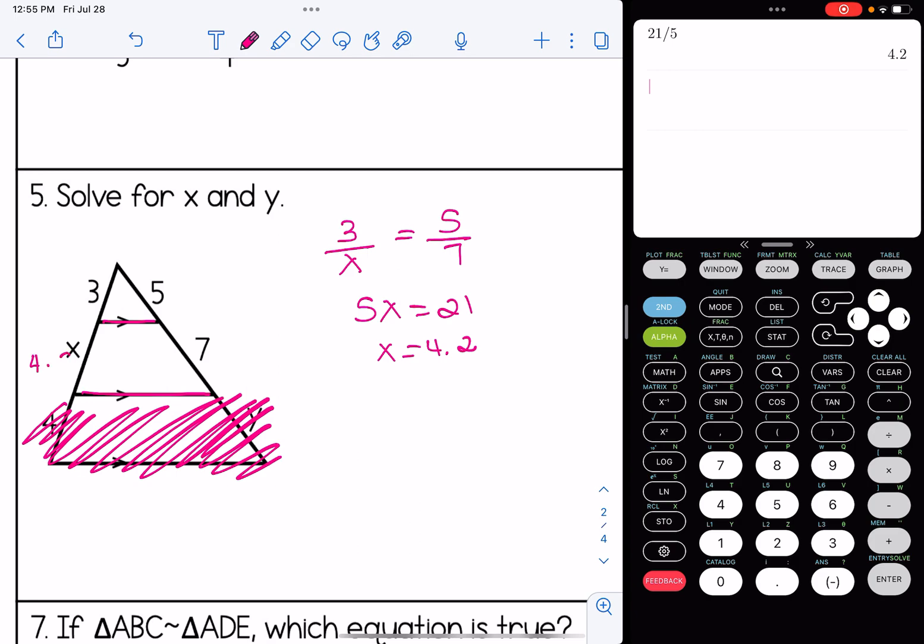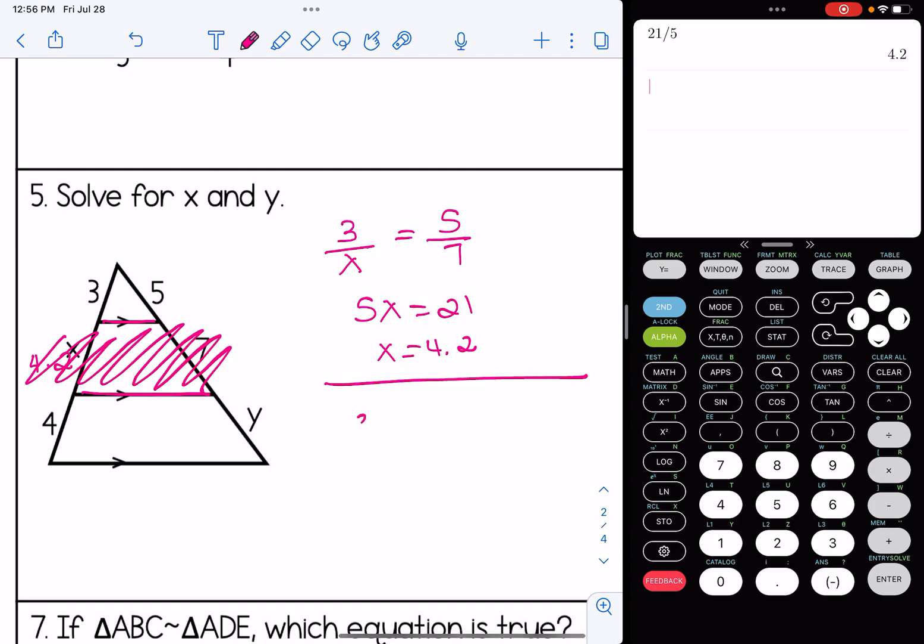I'm going to just go put 4.2 over in the diagram here as well. Now I'm going to solve for Y. When I solve for Y, I'm definitely going to be using this 4 and the Y on the bottom, like the bottom layer of this triangle. It's up to you, do you want to pick the 3 and the 5 again or the 4.2 and the 7? It doesn't make a difference. I'm going to go with 3 and 5 again. So it's 3 over 4 equals 5 over Y. 3Y equals 20. This is going to give us a repeating decimal here, so I'm going to just leave that as 20 over 3. Y in this case is 20 thirds.